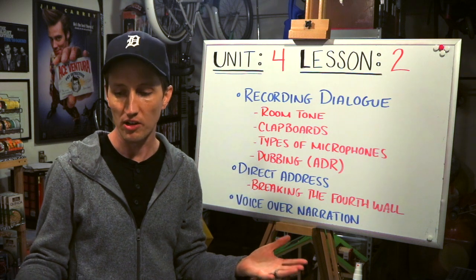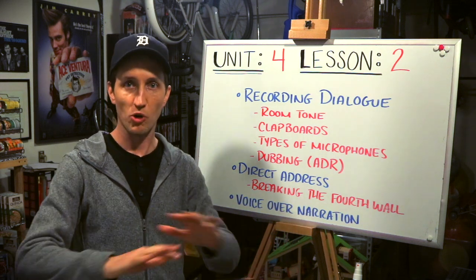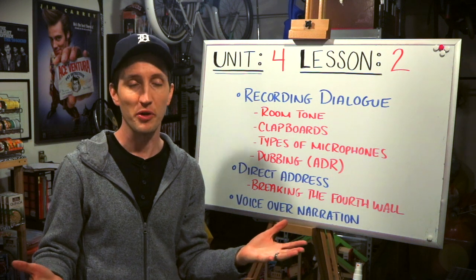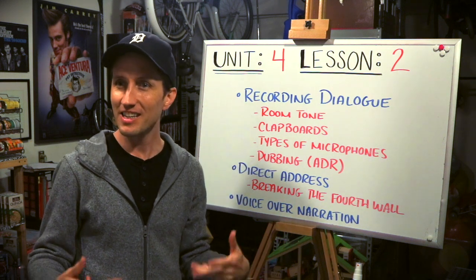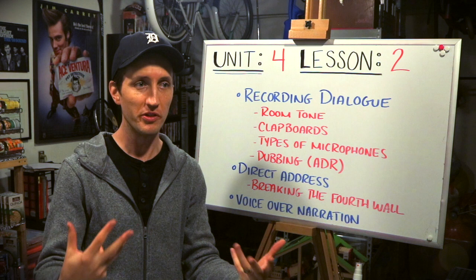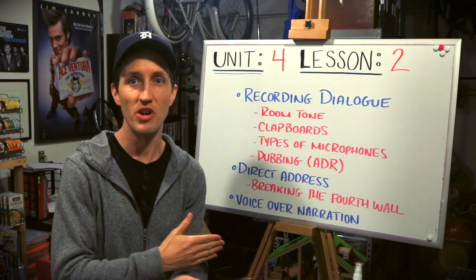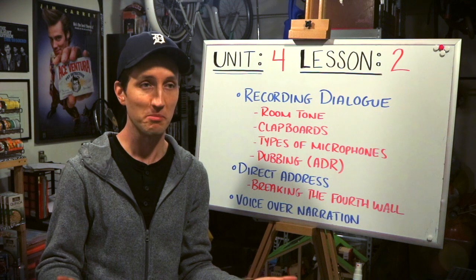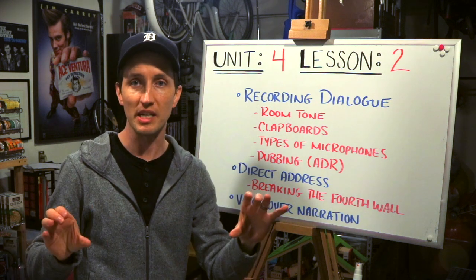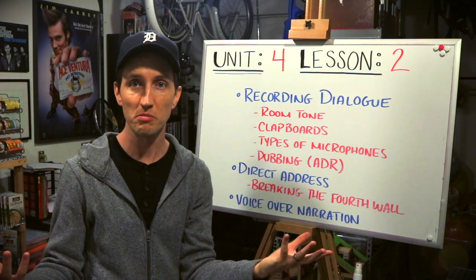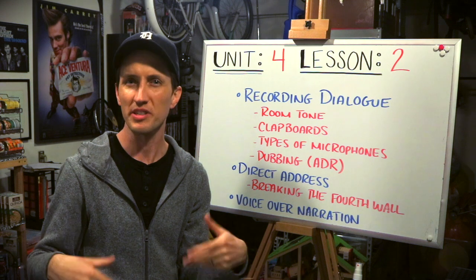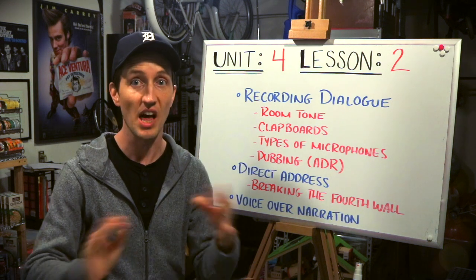Room tone. If you're going to record dialogue, the first thing you want to do in any scene is quiet the room and hit record for about 30 seconds. In editing, sometimes there are gaps of dialogue or gaps in time that you need to fill. You don't want no audio, because nothing can be deafening. But if you record room tone, you can fill in those gaps and it will help ease those awkward silent moments, making it sound more naturalistic.